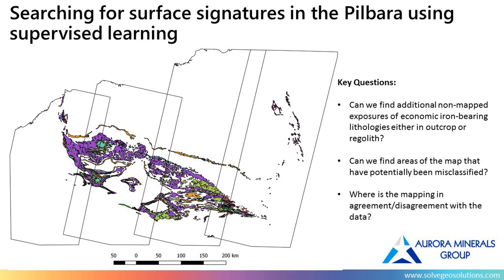What we're doing is training machine learning classifiers to recognize the signature of every different lithology in the Hamersley Group and surrounding groups. We tell the model to go through all 300 million pixels and tell us how close each pixel is to any of those particular lithologies.